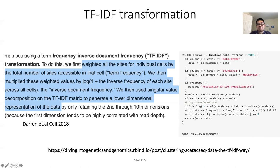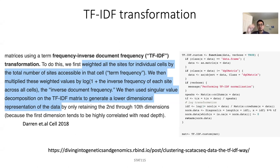By the way, this function is implemented in Seurat, so you don't have to do it manually. I also have a blog post linked here to explain exactly what TF-IDF is doing. It's frequently used in text mining — that's why you see terms like term frequency and document frequency — because you can count the frequency of a word in a document and get a word-by-document matrix, which is also very sparse.